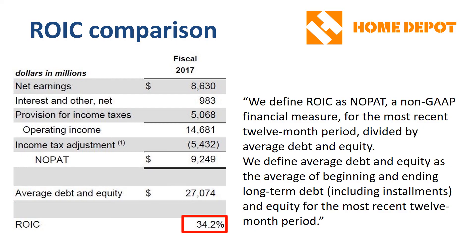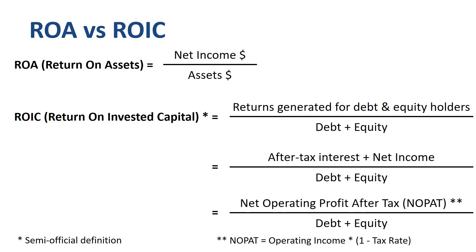Home Depot's ROIC, as per their definition, is 34%. To understand ROIC, it is useful to start off with ROA. The semi-official definition of ROIC is net operating profit after tax in the numerator, divided by debt plus equity in the denominator. Always check the exact definition that a specific company uses before comparing ROICs, as it is a non-GAAP metric.